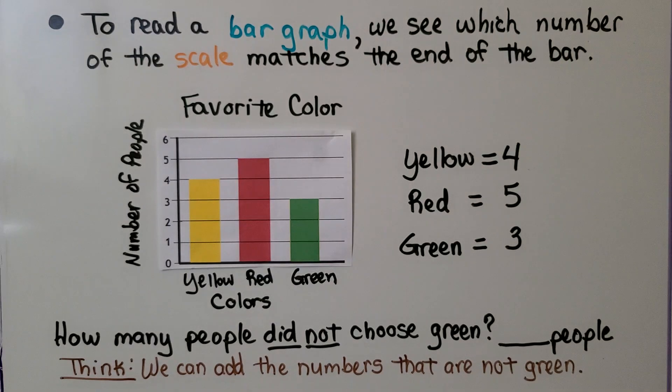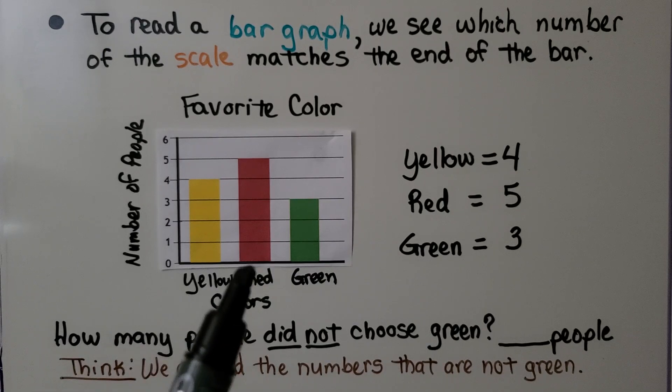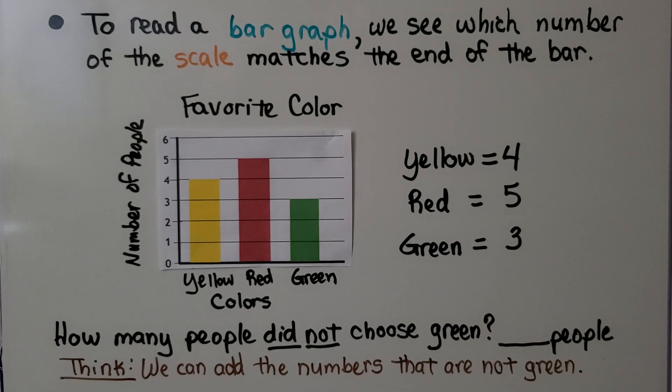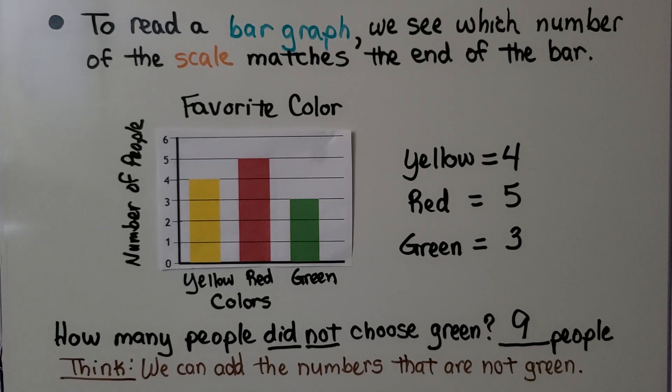So how many people did not choose green? We think we can add the numbers that are not green. The numbers that are not green are for yellow and red. If we add the number of yellow and the number of red, we have four plus five and four plus five is equal to nine. We're looking for the number that were not green. So we added how many were yellow and how many were red together.